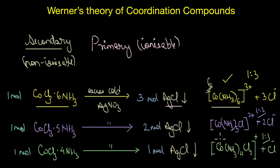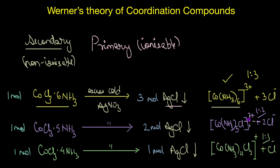In the last example, two chloride ions are linked to the metal atom through secondary bonding, and only one chloride ion is ionizable via primary bonding, which is why only one mole of AgCl is precipitated. In each of these cobalt compounds, cobalt has a fixed secondary valency of six — it could be coordinated with six ammonia ligands, or five ammonia and one chloride, or four ammonia and two chloride ions.